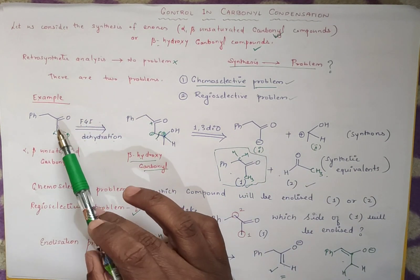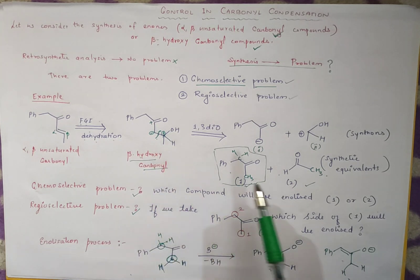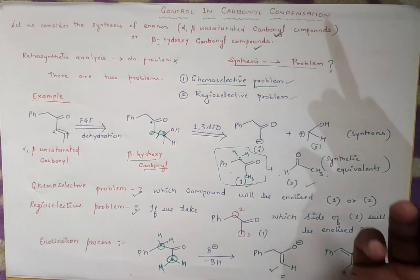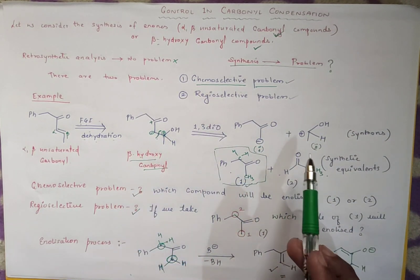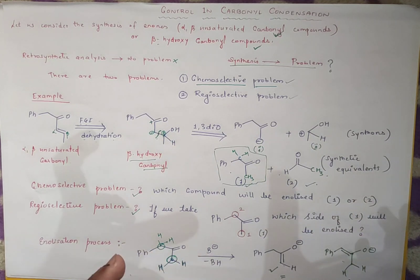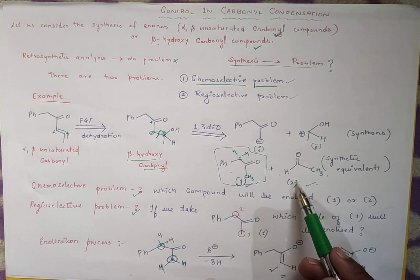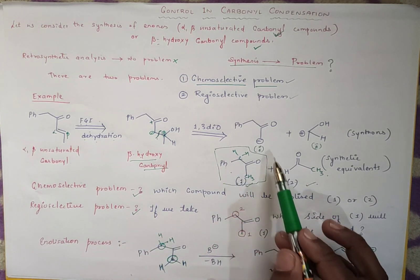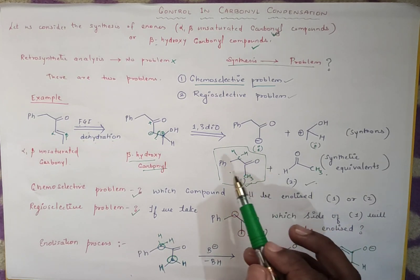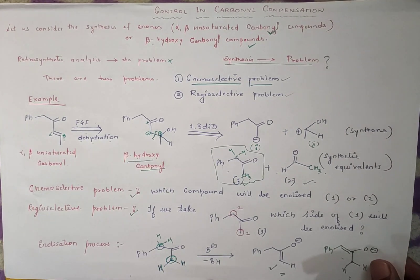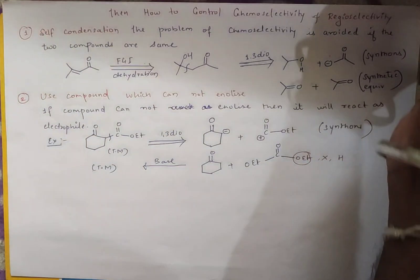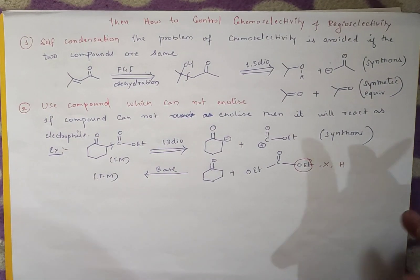I hope you have understood. So what is the disconnection of alpha-beta-unsaturated carbonyl compound and beta-hydroxy carbonyl compound? When we are doing retrosynthetic analysis, there is no problem. But when we are doing synthesis, there arise some problems — that is, chemoselective problem and regioselective problem. What is chemoselective problem? Whether to enolize compound number one or two — that is called chemoselective. The choice is between the two reactants. What is the regioselective problem? In one single reactant, there are two places where enolization can be done. This is known as the regioselective problem. So this is what a basic introduction. Now, how to control this problem — how to control chemoselectivity and regioselectivity?